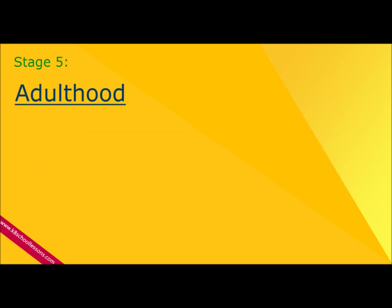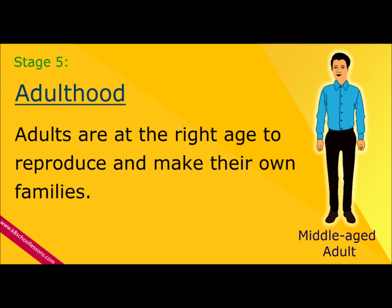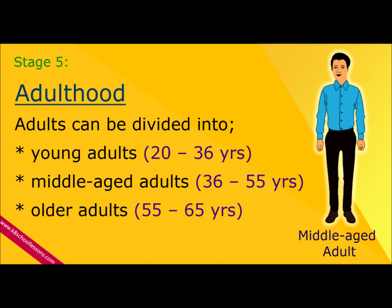Stage 5: Adulthood. People from age 20 to 65 years old are adults. Adults are at the right age to reproduce and make their own families. Adults can be divided into young adults, 20 to 36 years; middle-aged adults, 36 to 55 years; and older adults, 55 to 65 years.